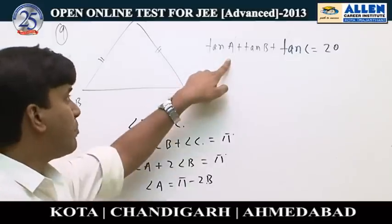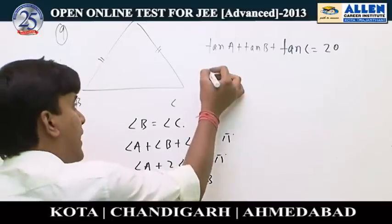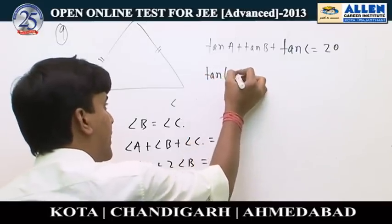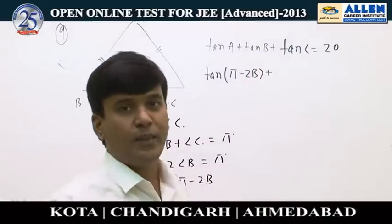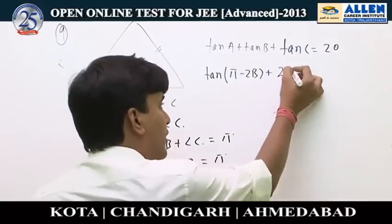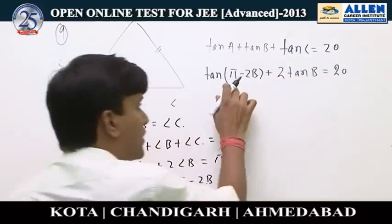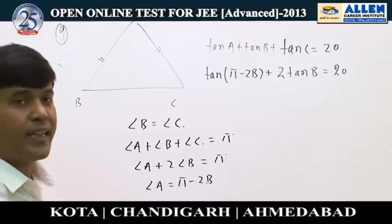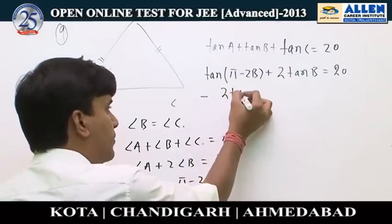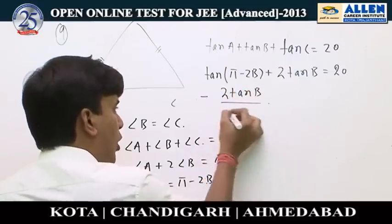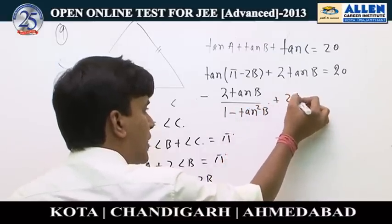Substituting A as pi minus 2B and C as B into the equation gives tan(pi minus 2B) plus tanB plus tanB, which is minus tan2B plus 2tanB equals 20. Using the double angle formula, this becomes minus 2tanB divided by (1 minus tan²B) plus 2tanB equals 20.